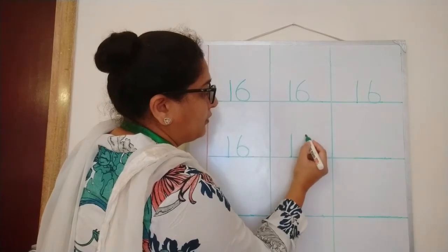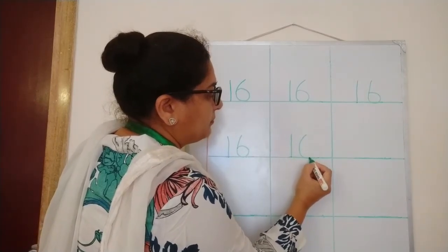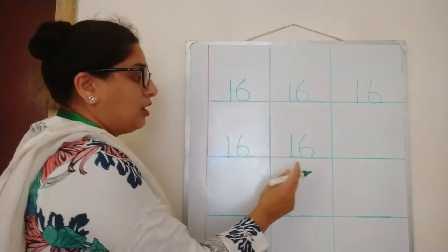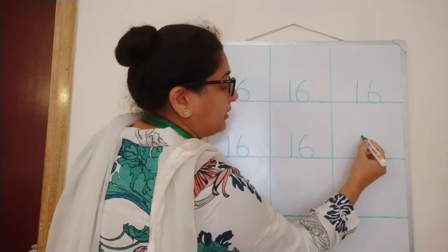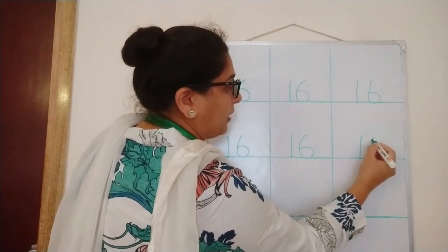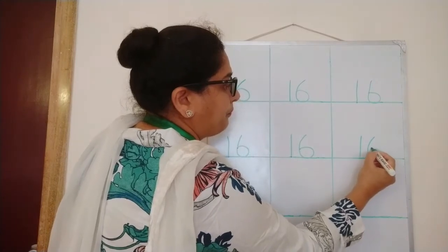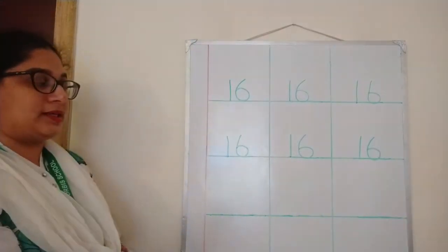Are you looking at the video carefully children? See, my number is touching the bottom line. The number is touching the bottom line. 1, 6, 16.